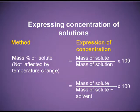There are different ways to express composition. Let's discuss them one by one. Mass Percentage is the mass of the solute divided by the total mass, multiplied by 100. For example, a 10% glucose solution by mass means 10 grams of glucose and 90 grams of water. To calculate the mass percentage: 10 divided by (10 + 90), multiplied by 100.